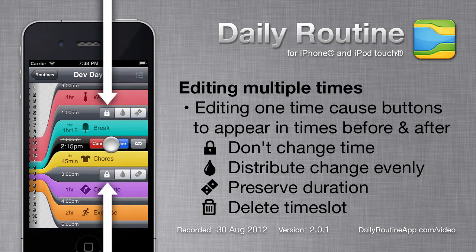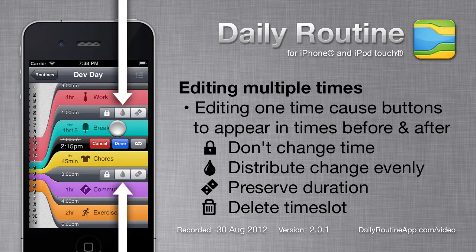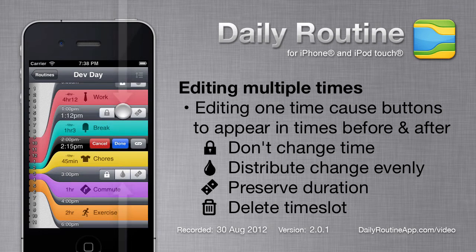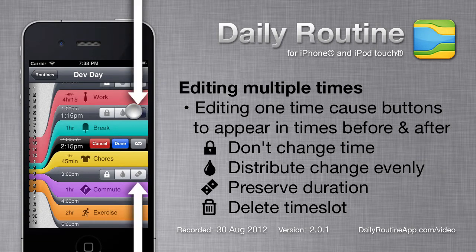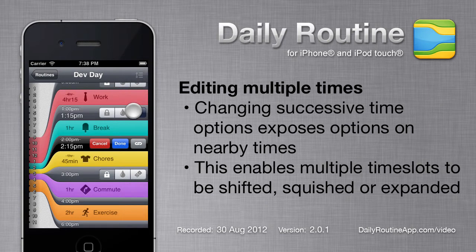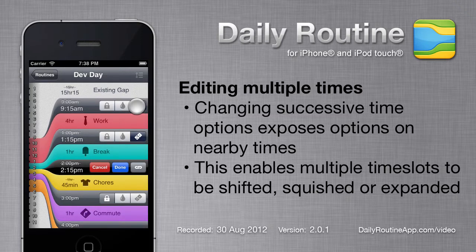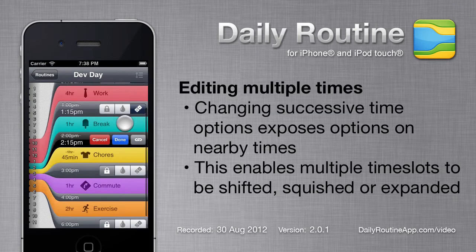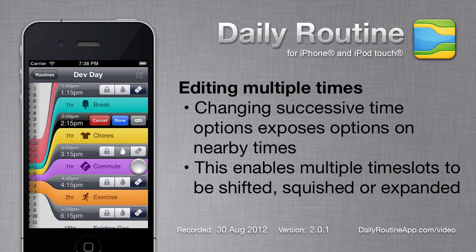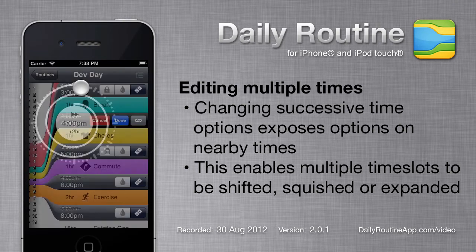We can override this if we wish. Tapping the Droplet button will cause DailyRoutine to change the times proportionally to the timeslot's durations. Choosing the Domino icon will preserve the duration of the timeslot. As we change the selection, the next timebar also presents options, and changing that causes the next time options to appear, and so on — allowing us to shift or squish many timeslots.